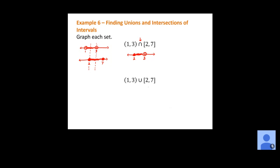For the union of those same intervals (1, 3) and [2, 7], we combine both graphs. Since 1 is the smallest value but not included, it gets an open circle. Seven is the largest value and is included, so it gets a closed circle. We shade everything in between — including 3 this time, because the second interval [2, 7] does include 3. The union is (1, 7]. Remember: intersection shows only the overlapping region, while union puts all points from either graph together.